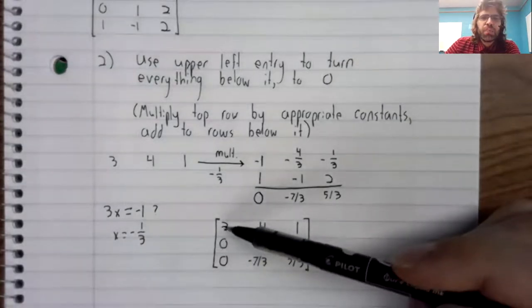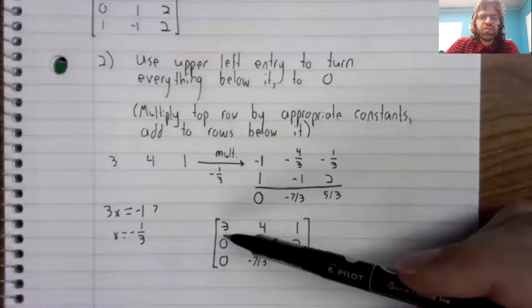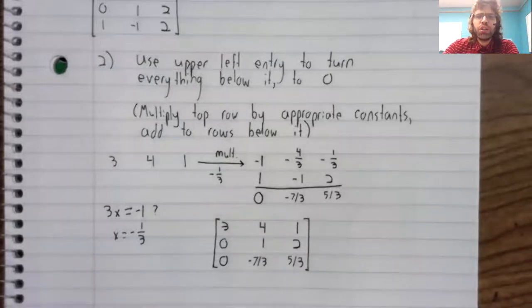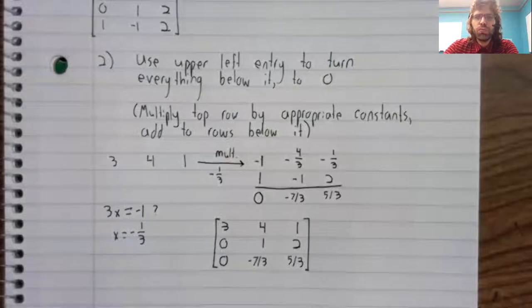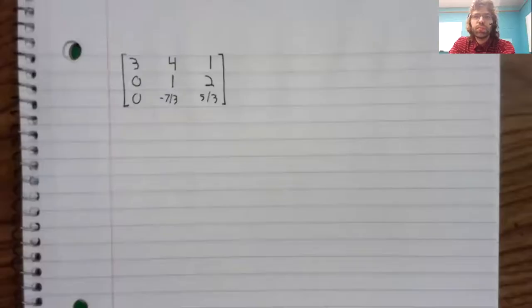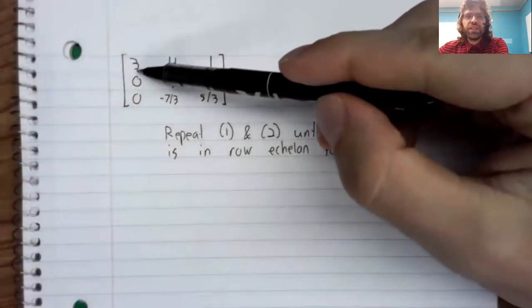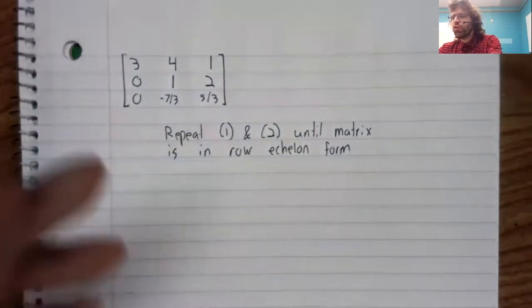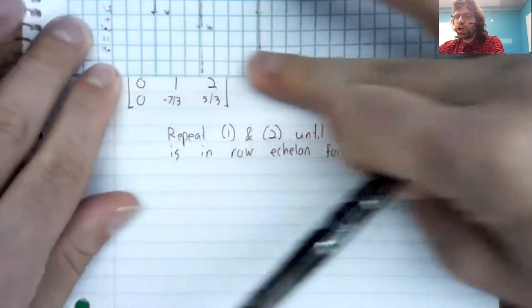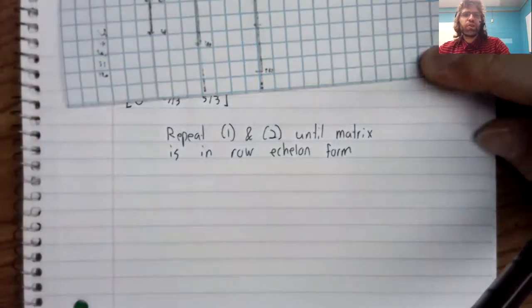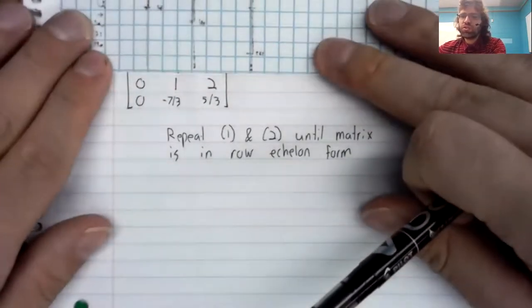We didn't need to do anything with the second row. But the third row has become zero, negative seven thirds, five thirds. And now that everything below this entry is zero, we are done with the top row. Here's where we're at. And now this algorithm repeats. Remember what I just said.